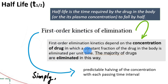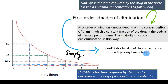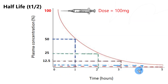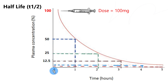A constant fraction of the drug in the body is eliminated per unit time — this is the predictable halving of the concentration with each passing time interval. This elimination continues with each passing time interval until the drug is completely eliminated from the body.